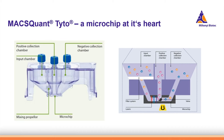On the right side we see this in more detail. Cells are coming from the input chamber into the channels of the microchip. They are crossing the laser beams, and if the system recognizes the target cells, a pulse will open the valve and the cells will go to the positive collection chamber.